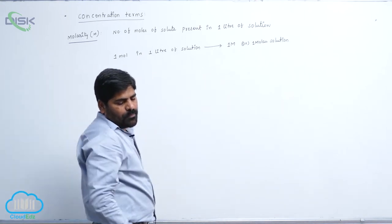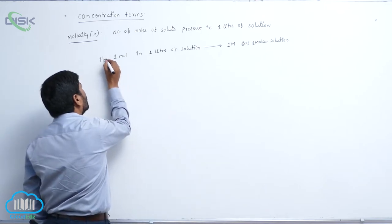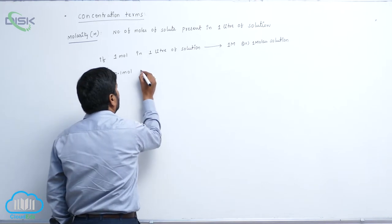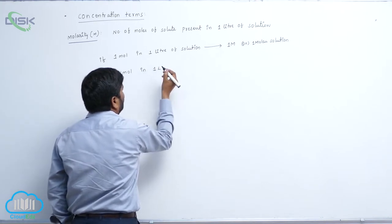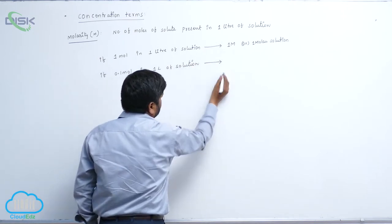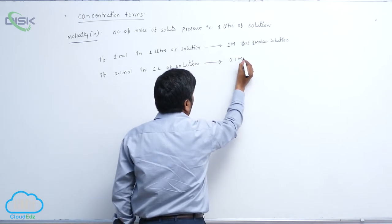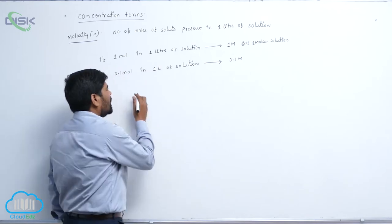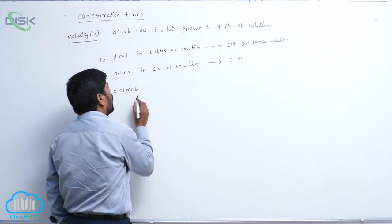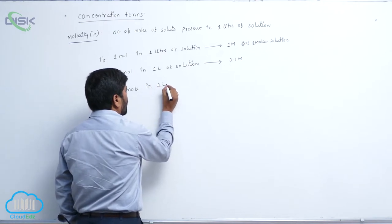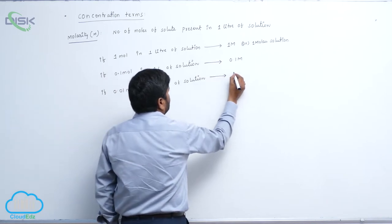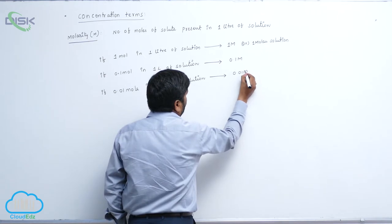If 0.1 mol is present in one litre of solution, it equals 0.1M. And if 0.01 mol is in one litre of solution, it becomes 0.01M.